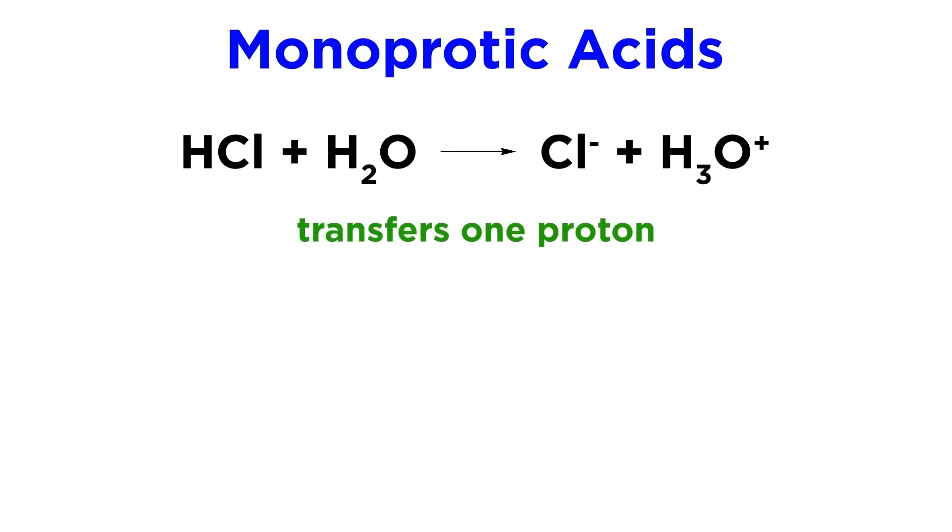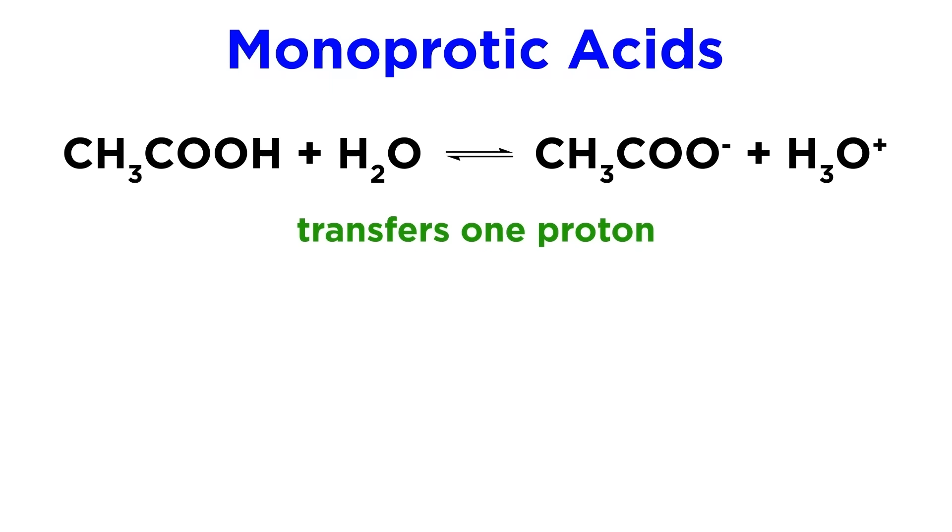Again, something like hydrochloric acid is monoprotic because it contains only one hydrogen atom. Once it transfers a proton, there is no more hydrogen left. Some acids contain more than one hydrogen atom, but only one of them is acidic. Once it is transferred, it can no longer act as an acid.